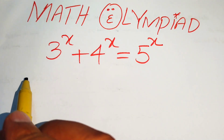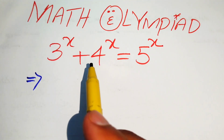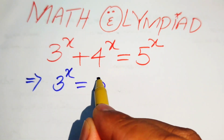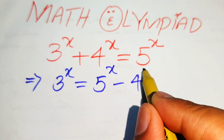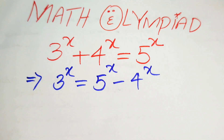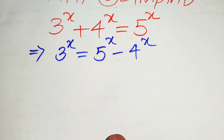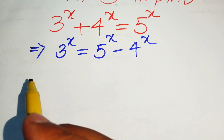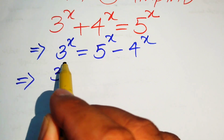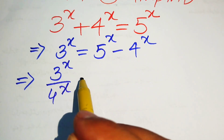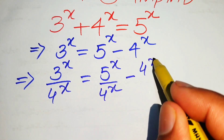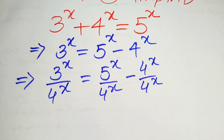The very first step is to move 4 to the power of x to the right hand side, so it becomes 3 to the power of x equals 5 to the power of x minus 4 to the power of x. Next, we divide both sides of the equation by 4 to the power of x, giving us 3^x over 4^x equals 5^x over 4^x minus 4^x over 4^x.